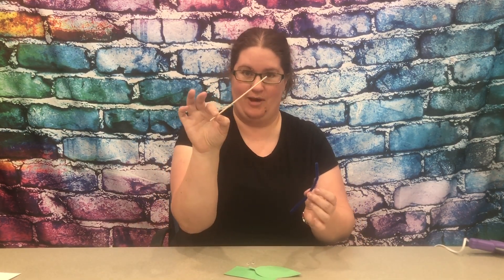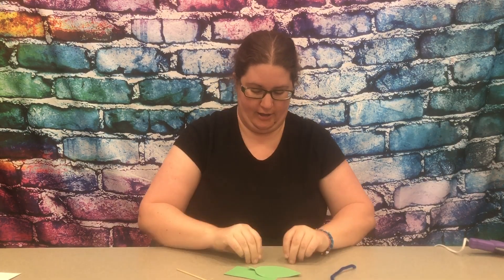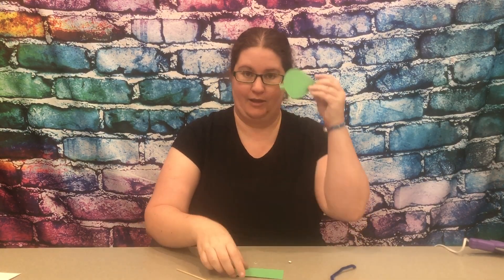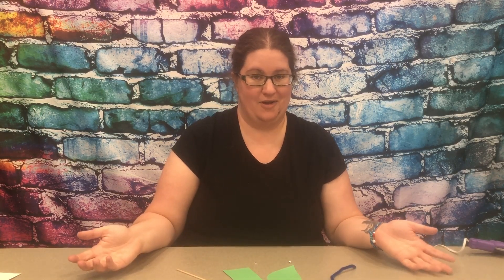So in your craft packet you'll have a tiny dowel rod, a piece of a pipe cleaner, two little googly eyes, a leaf shape, and a rectangle and I will show you how to put it all together.